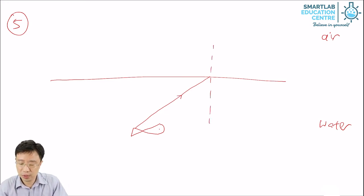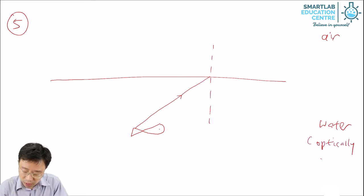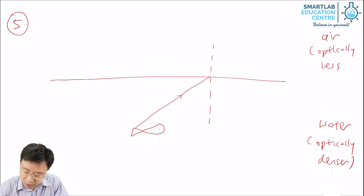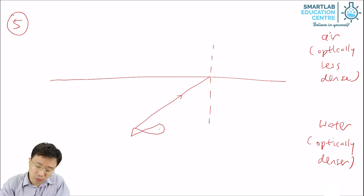And since water is optically denser, air is optically less dense. So, when light travels from water to air, it will bend away from the normal.